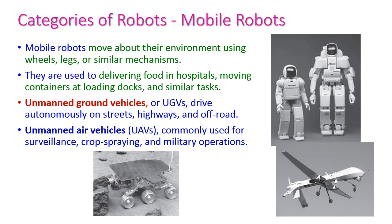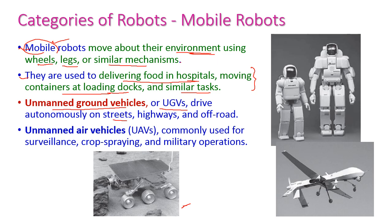The second category is mobile robots, which move around their environment using wheels, legs, or similar mechanisms. They are used for delivering food in hospitals, moving containers, loading trucks, and similar tasks. A special type called UGV — unmanned ground vehicles — can move automatically on streets, highways, and off-roads, acting like an automatic taxi driver. Another type is UAV — unmanned air vehicles — which are commonly used for surveillance, crop spraying, and military operations.